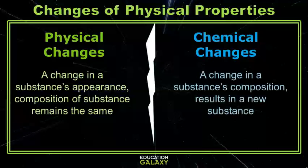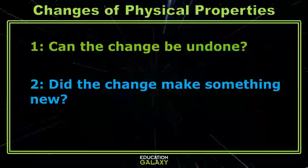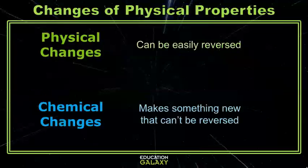You're probably wondering what that means. The easiest way to think about it is to ask yourself two questions: Can I undo this? And was something completely new made? Physical changes can all be reversed or undone. With chemical changes, something new is always made and it can't be reversed.